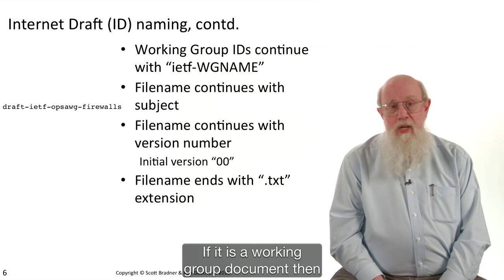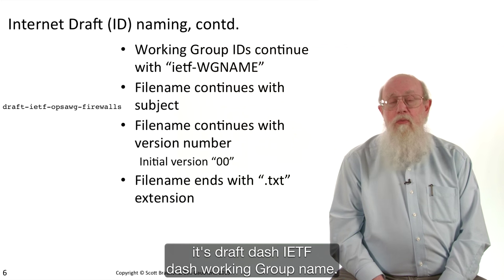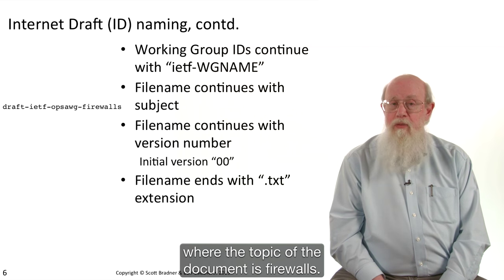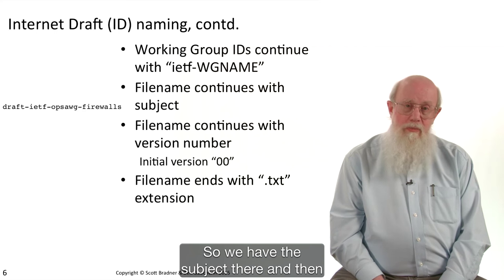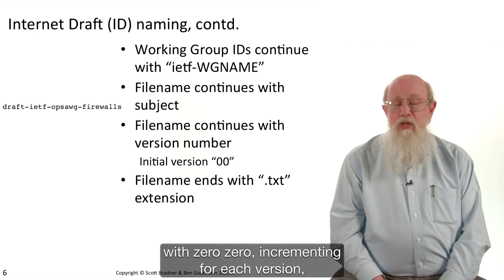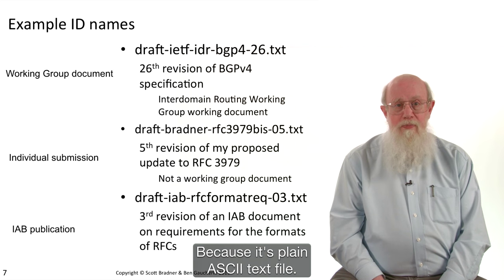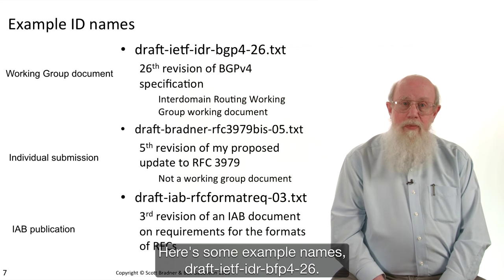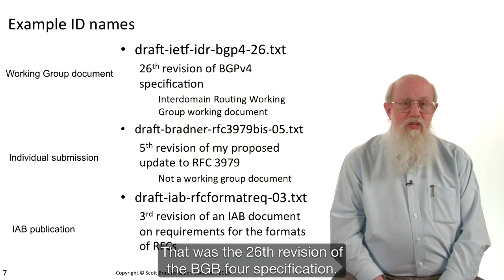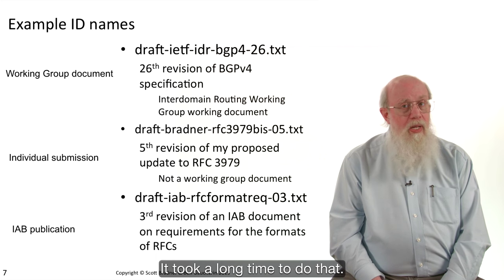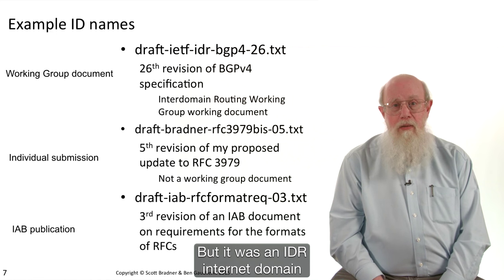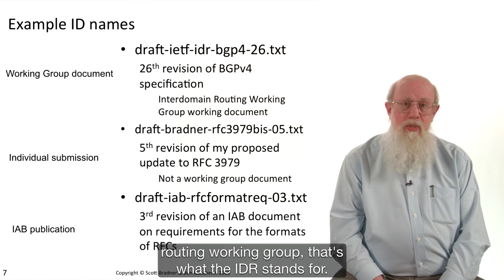If it is a working group document, then it's 'draft-ietf-working-group-name'. So 'draft-ietf-ops-area-working-group-firewalls', where 'firewalls' is the topic of the document. You then append a version number starting with 00, incrementing for each version, and ending with .txt because it's a plain ASCII text file. Here's some example names: 'draft-ietf-idr-bgp4-26.txt' — that was the 26th revision of the BGP4 specification. It took a long time to do that, and that was the last version before it was published as an RFC. IDR stands for the Inter-Domain Routing Working Group.